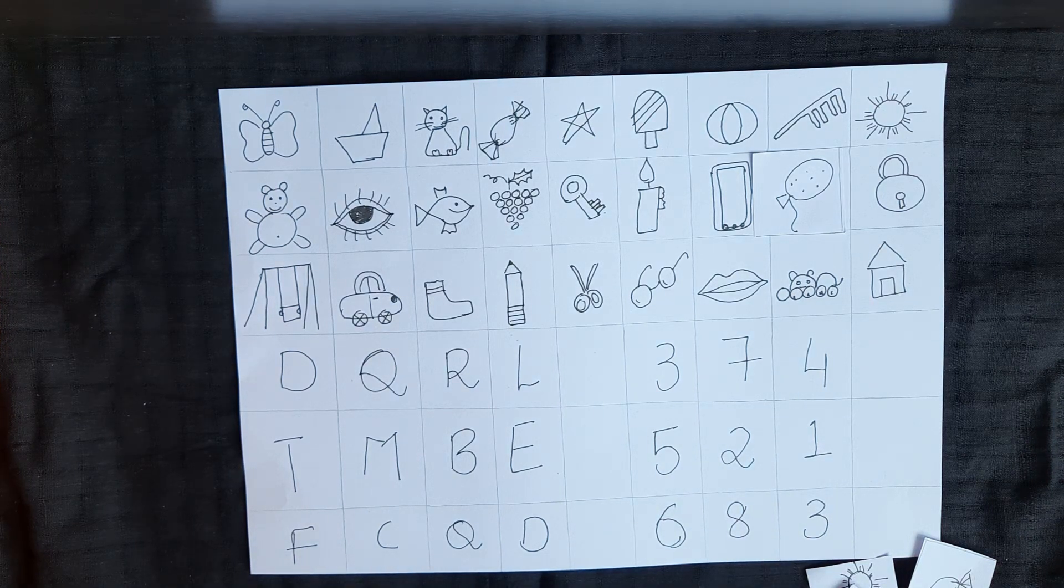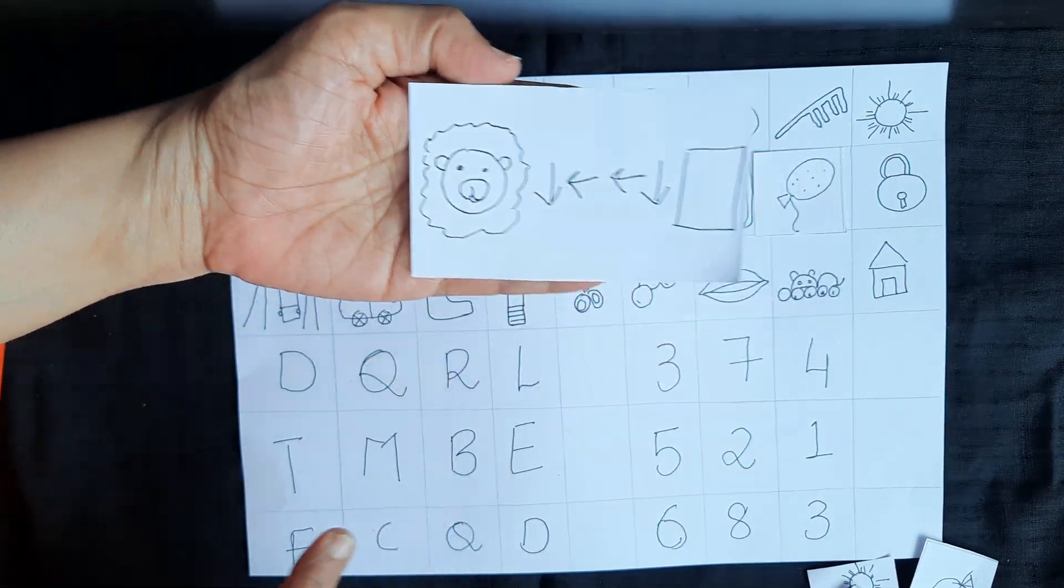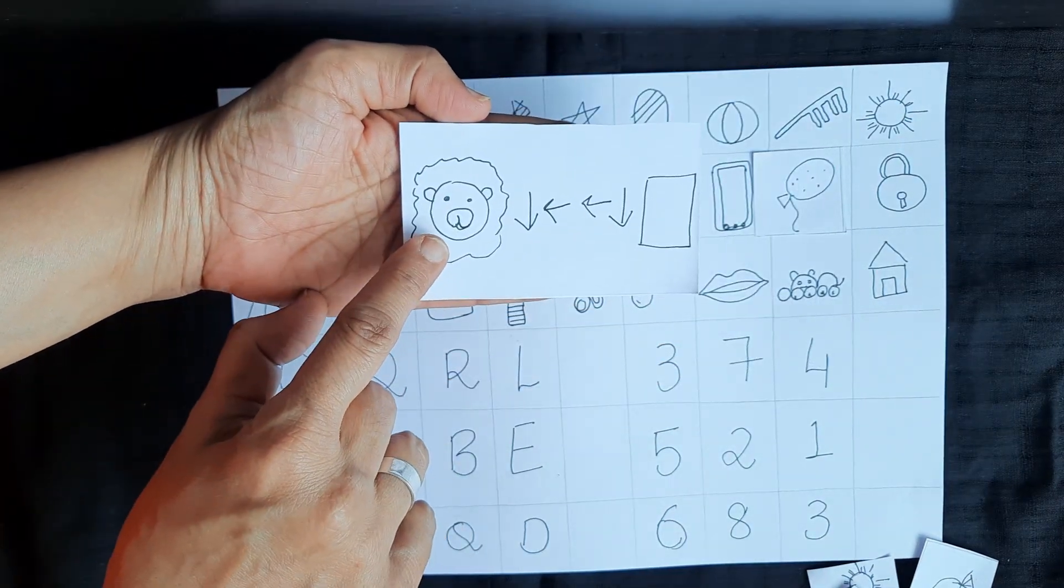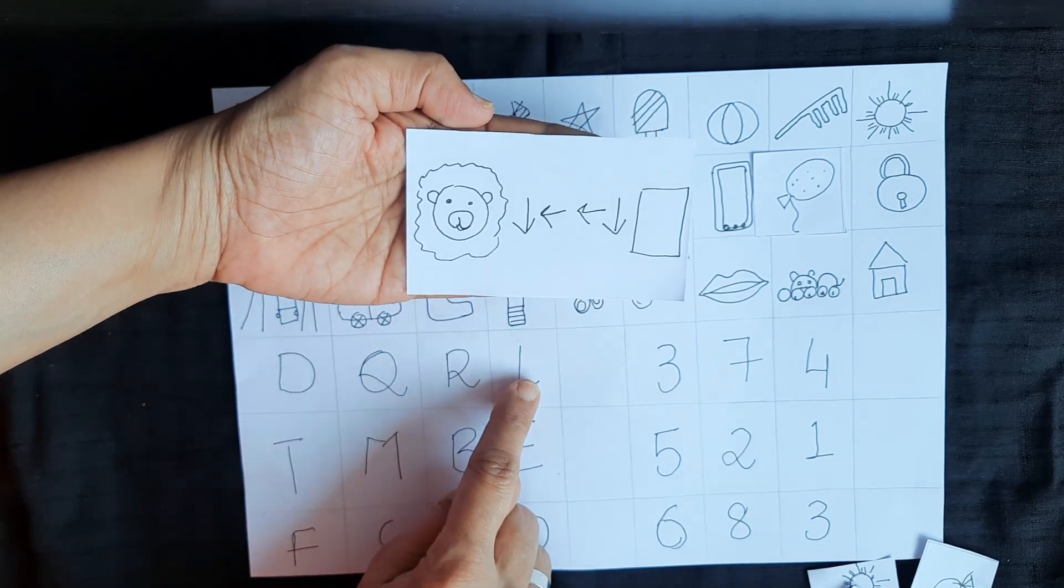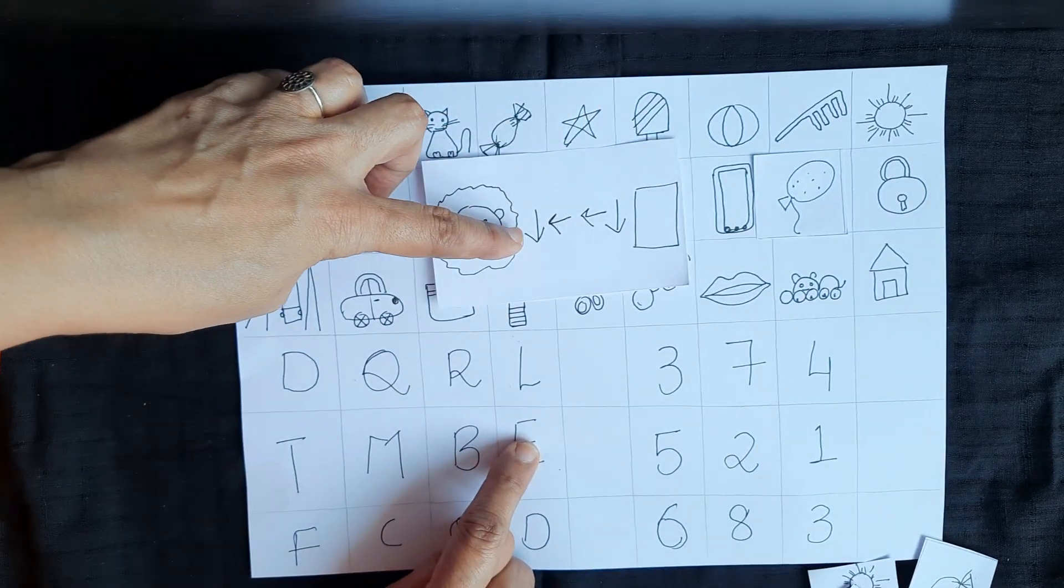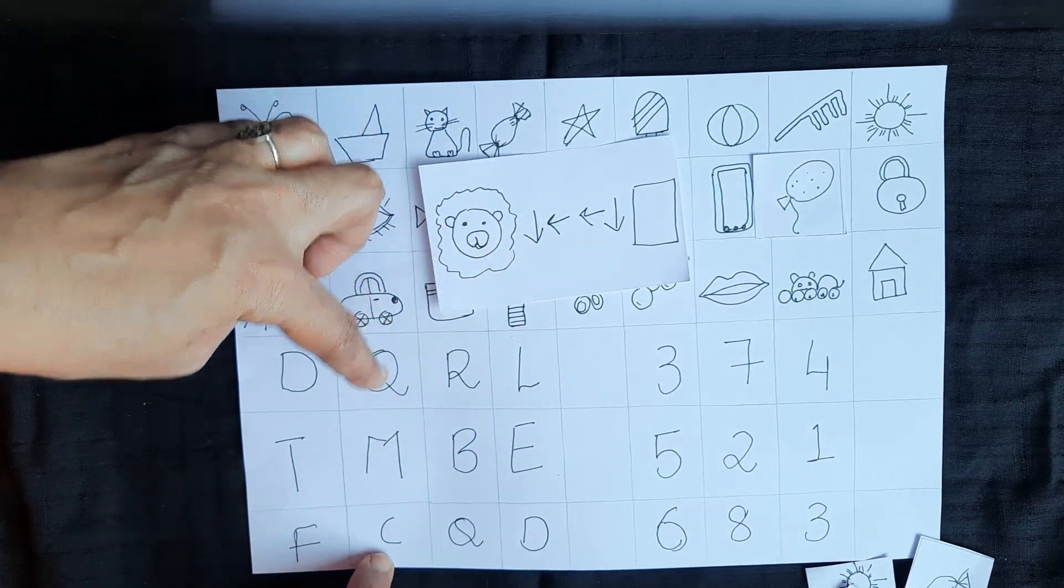Another thing that we can do is like this. Same cue card but for the alphabets. This is lion, so where is the lion? L for the lion. They have to start at the L, then you go down, then it says you go left, again you go left, and then you come down. That's a C, so the child has to write the C here.